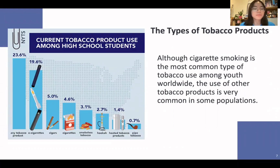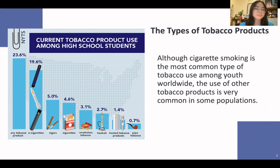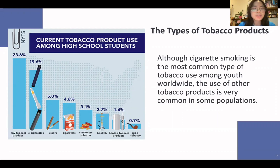Next, we are going to talk about the types of tobacco products. Although cigarette smoking is the most common type used among youth worldwide, other tobacco products are also very common in some populations. The tobacco products used among high school students include e-cigarettes — the most popular one — cigars, cigarettes, smokeless tobacco, hookah, heated tobacco products, and pipe tobacco. Flavorings in tobacco products make them more appealing to youth, which is why they are so drawn to e-cigarettes. In 2020, 85% of high school students and 74% of middle school students who used tobacco products in the past 30 days reported using a flavored tobacco product.